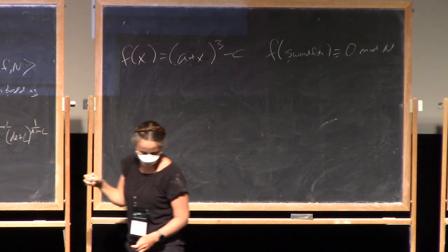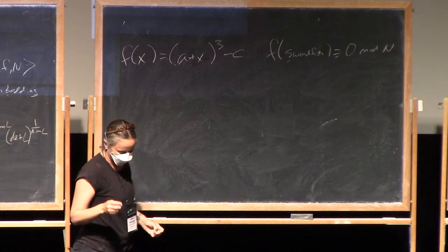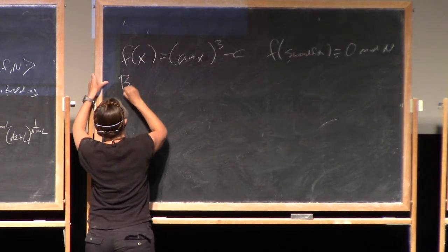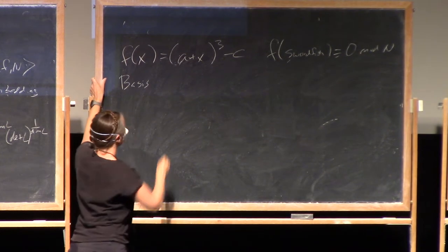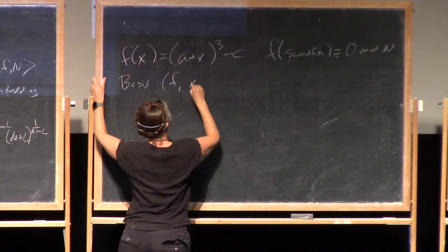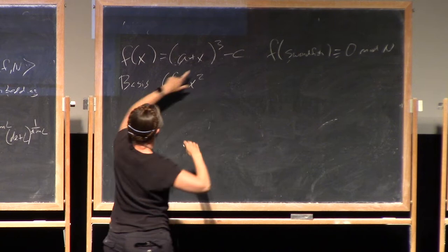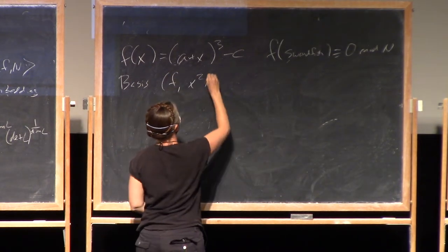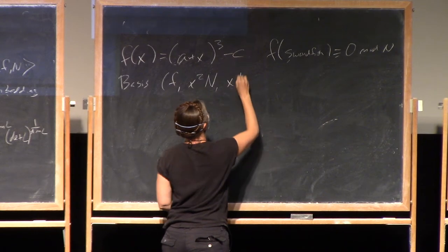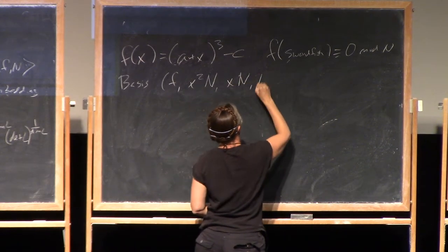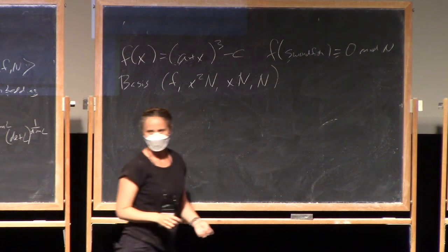Okay, so that's the root I'm looking for and the basis set of polynomials that I chose is actually just f. So f has degree three, I chose x squared n that happens to vanish mod n, x times n that vanishes mod n, and that totally vanishes mod n, that's my basis.